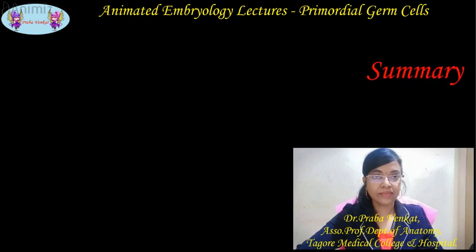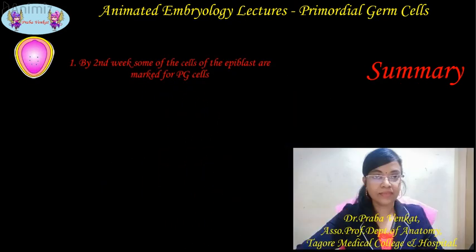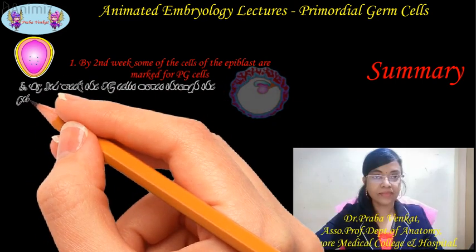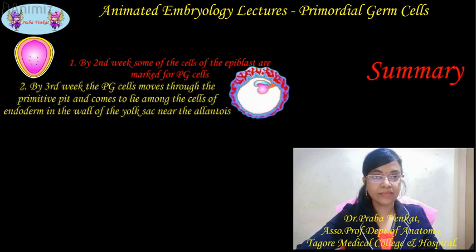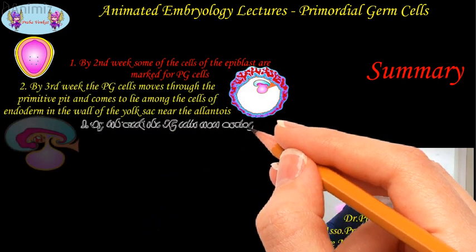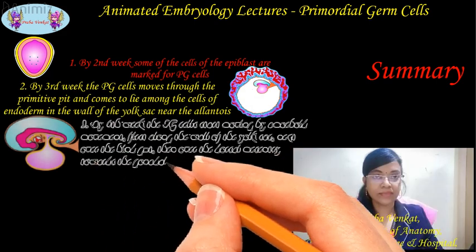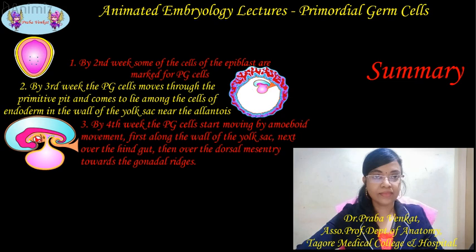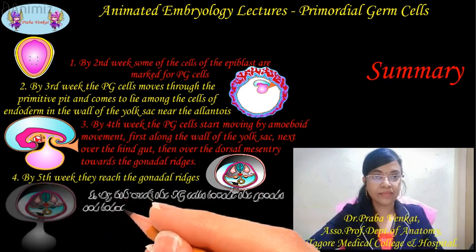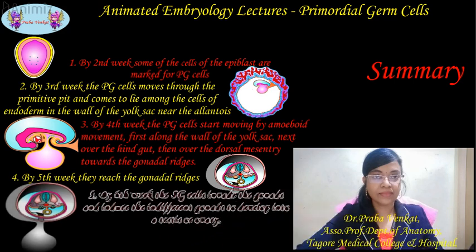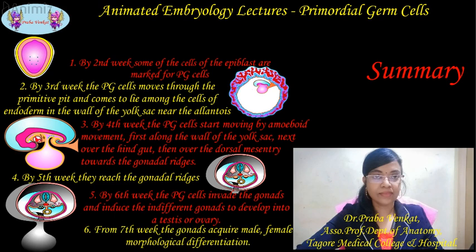Summary: By the second week, some cells of the epiblast are marked for PGC cells. By the third week, the PGC cells move through the primitive pit and come to lie among the cells of the endoderm in the wall of the yolk sac near the allantois. By the fourth week, the PGC cells start moving by amoeboid movement — first along the wall of the yolk sac, next over the hindgut, then through the dorsal mesentery towards the developing gonads. By the fifth week they reach the gonadal ridges. By the sixth week the PGC cells invade the gonads and induce the indifferent gonads to develop into testis or ovary. From the seventh week, the gonads acquire male or female morphological differentiation.